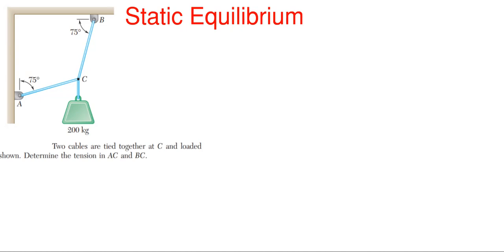So we have two cables that are tied together at point C here and they're loaded as shown with this 200 kilogram weight and we need to determine the tension in AC and the tension in BC. So first things first, we are going to have to turn this 200 kilograms into newtons. So whenever you have kilograms, we're just going to multiply by the acceleration of gravity of 9.81 meters per second squared and that gives us 1,962 newtons.